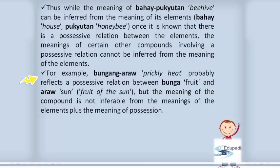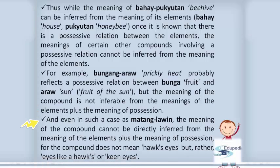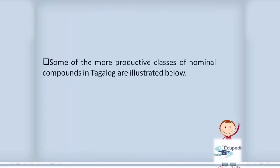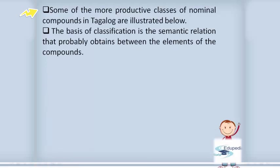The meaning of 'bungang araw' is not inferable from the meanings of its elements plus the meaning of possession. Even in a case like 'matang lawin,' the meaning of the compound cannot be directly inferred, because the compound does not mean 'hawk's eyes' but rather 'eyes like a hawk's' or 'keen eyes.' Some of the more productive classes of nominal compounds in Tagalog are illustrated below.